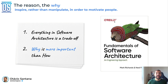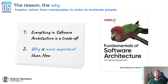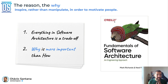An ultimate software engineer is a person who understands the 'why' first — the reason to do something before doing it. This amazing book, 'Fundamentals of Software Architecture,' provides two laws: first, the world is not perfect, so everything in software architecture is a trade-off; and second, understand the reason first, then go to the implementation.